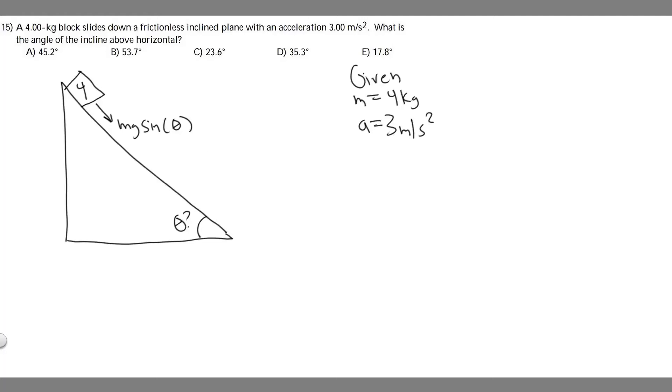In this problem, we're told a 4-kilogram block slides down a frictionless inclined plane with an acceleration of 3 meters per second squared. What is the angle of the incline above the horizontal?